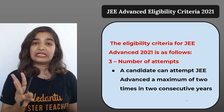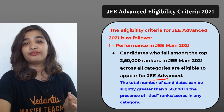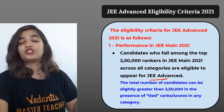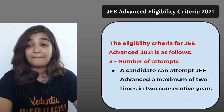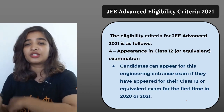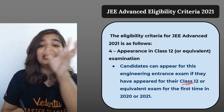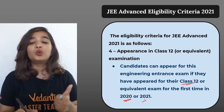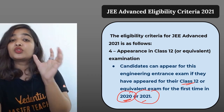The third eligibility criterion is the number of attempts. A candidate can attempt JEE Advanced a maximum of two times in two consecutive years. Regarding class 12 appearance, candidates can appear for the engineering entrance exam if they have appeared for their class 12 or equivalent examination for the first time in the year 2020 or 2021.